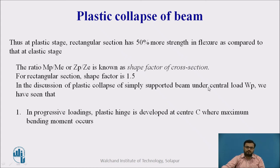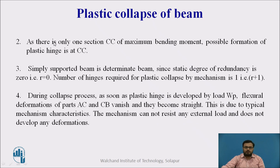A shape factor of 1.5 means that at the plastic stage, a rectangular section has 50% more strength in flexure compared to the elastic stage. In the plastic collapse of a simply supported beam under central load WP, the plastic hinge develops at C. Since there is only one section CC of maximum bending moment, hinge formation occurs only at CC. The simply supported beam is a determinate structure with static degree of redundancy R = 0, so the number of hinges required for plastic collapse = R + 1 = 1.